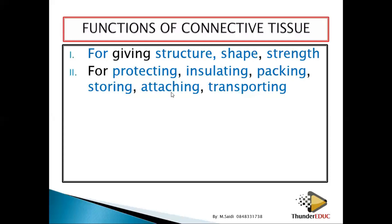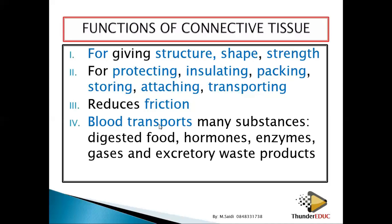Another function is attaching — tendons and ligaments attach body parts together. Connective tissue also transports substances. Blood cells reduce friction in joints. When older people have joint pain, it is because the protective cartilage that prevents friction between bones has worn away, causing the bones to rub against each other. Blood is also very important for transporting substances such as food, hormones, enzymes, gases, and excretory products.